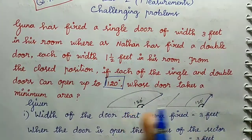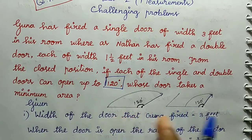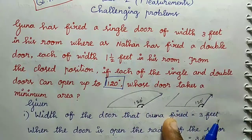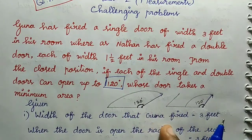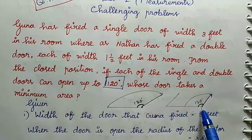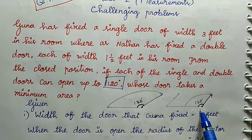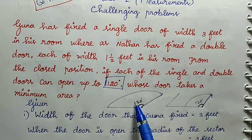Go to the two diagrams — you can see the answer more clearly. The minimum area is taken by the double door.